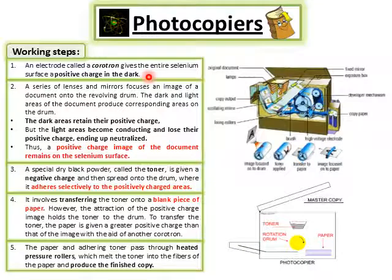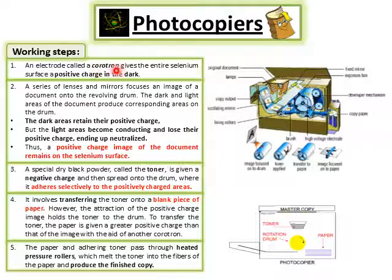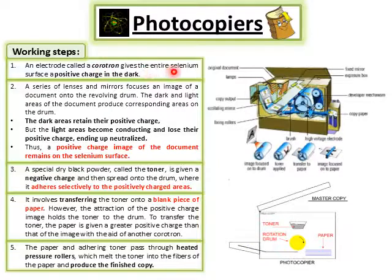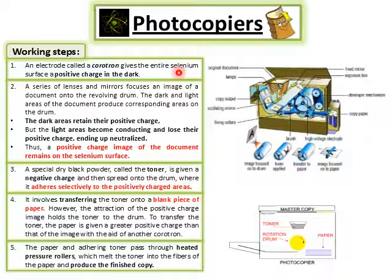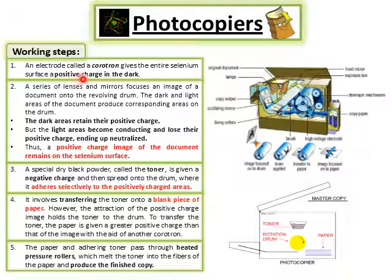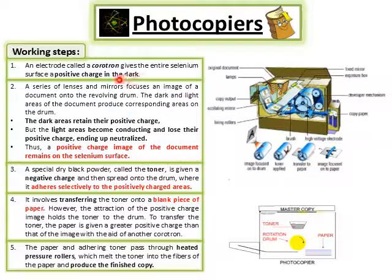To summarize the first step: we have an electrode called a corotron. The corotron positively charges the selenium-coated aluminium drum. At this stage, it is dark and light exposure is not happening, so the selenium surface receives a complete positive charge.